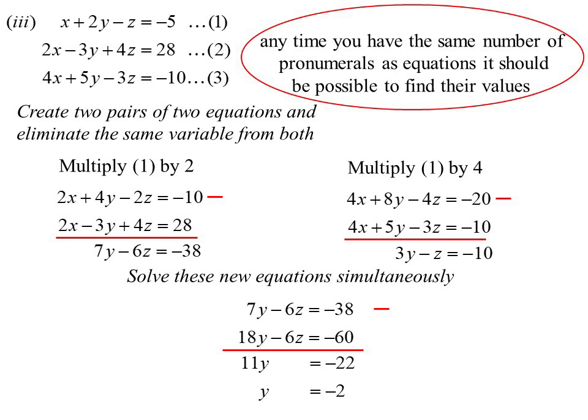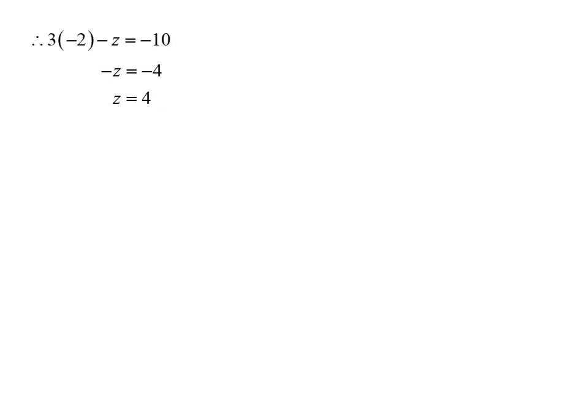It's now just a matter of working backwards and getting the other answers. So sub in, we get z is four. Now I know z, sub in, and I get x is three. Bingo. We have our solution. x equals three, y equals negative two, z equals four.